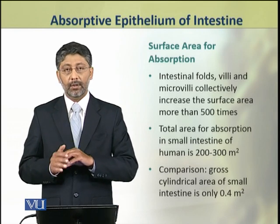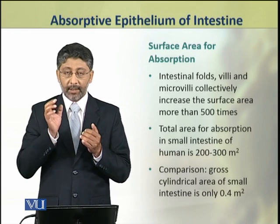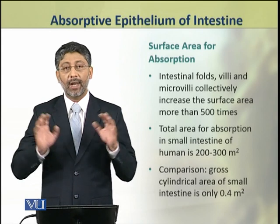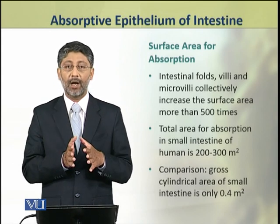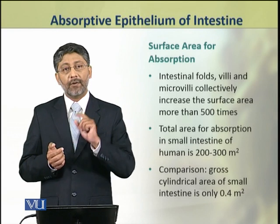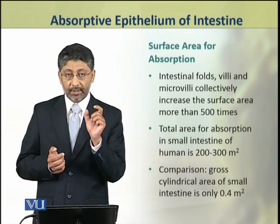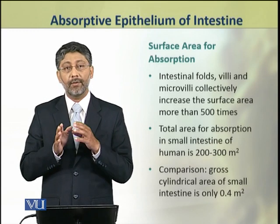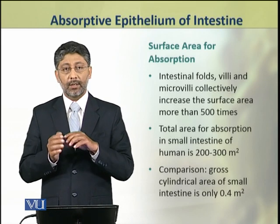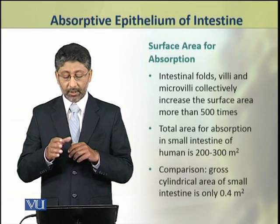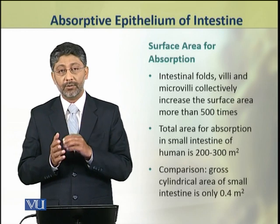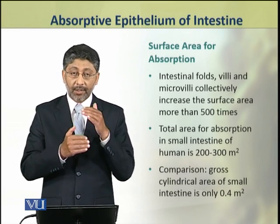Overall, the intestinal epithelium — which has intestinal folds, villi, and microvilli — collectively increases the surface area more than 500 times. The total area for absorption of the small intestine in humans is about 200 to 300 square meters, whereas the plain cylindrical surface area of the small intestine is only 0.4 square meters. This represents a substantial increase of approximately 500 times.